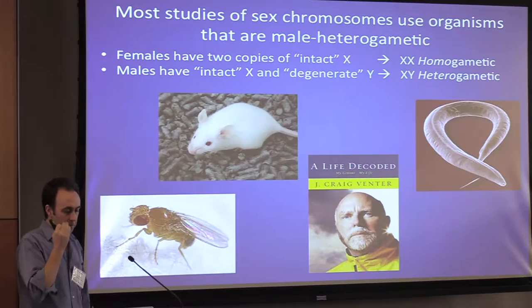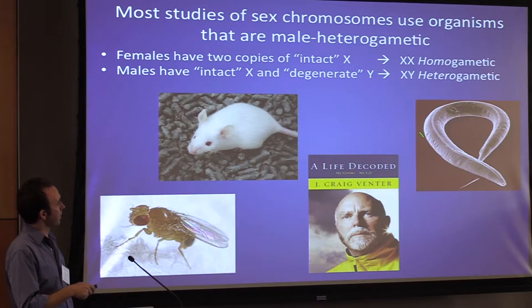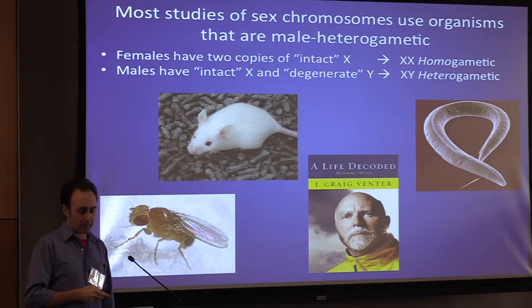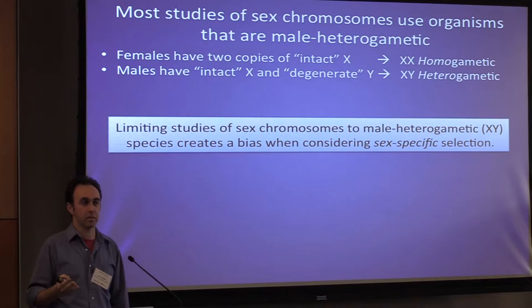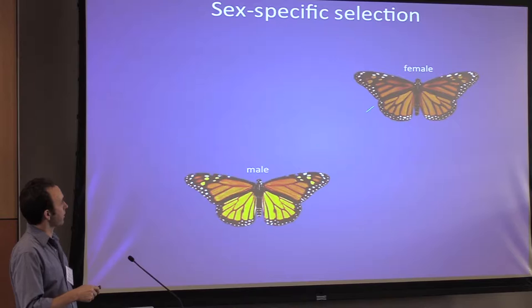Most of this work has been done primarily in male heterogametic taxa. The major model systems we work with are male heterogametic — some lack a Y chromosome and are XO, but still male heterogametic. This potentially presents a bias we have to recognize, which comes in when you start to consider sex-specific selection.